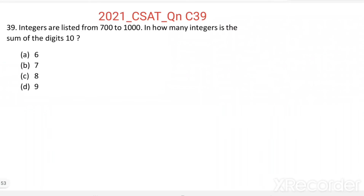Question 39. Integers are listed from 700 to 1000. In how many integers is the sum of the digits 10? All natural numbers are integers, so integers listed from 700 to 1000 means natural numbers listed from 700 to 1000. In how many integers is the sum of the digits 10?